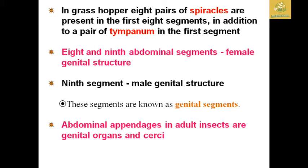Each pair of spiracles are present in the first eight segments, in addition to two pairs of tympanum in the first segment. The eighth and ninth abdominal segments have female genital structures, while the ninth segment alone contains male genital structures. These are known as the genital segments — eighth and ninth in females, and only the ninth in males. The abdominal appendages in adults are the genital organs and the cerci.